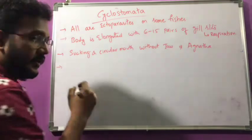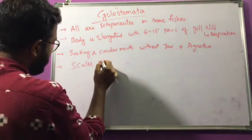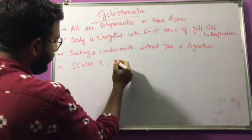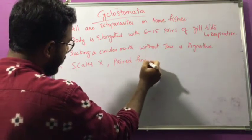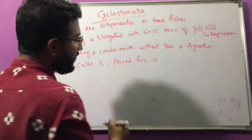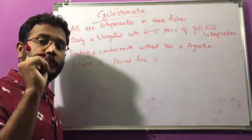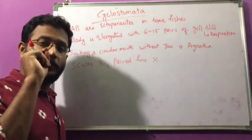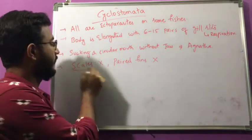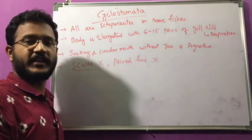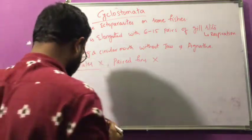In these animals, scales are absent and paired fins are also absent. Scales are the plate-like materials you remove when you clean a fish — that is the outer skin. In Cyclostomes, those scales are absent.